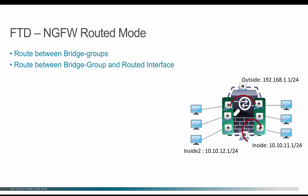By default, traffic will not pass between bridge groups or between a bridge group and a routed interface. In order to achieve routing capability across bridge groups or from a bridge group to a routed interface, you have to create a name on the bridge group BVI interface. Once the name is defined on the BVI interface, the BVI can route traffic across a particular bridge group to a routed interface or across another bridge group that also has a name defined on its BVI.